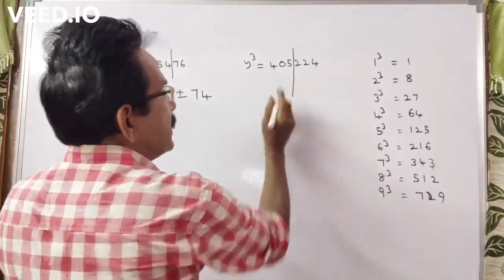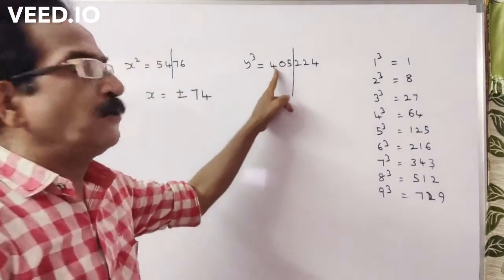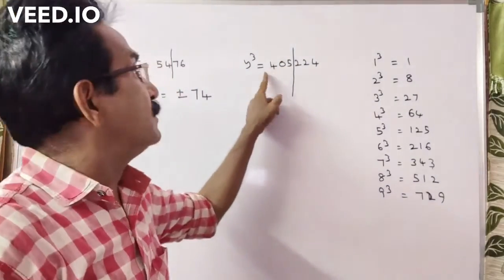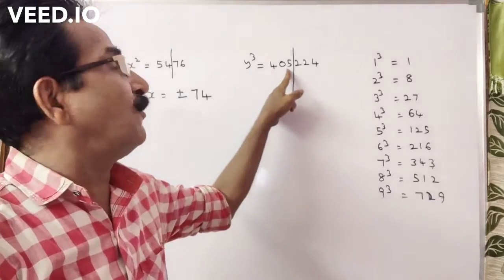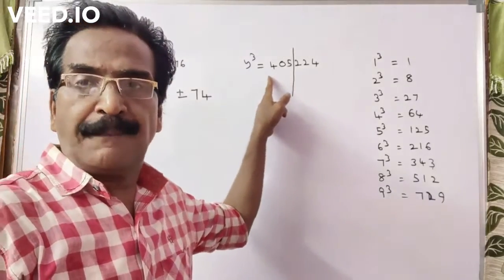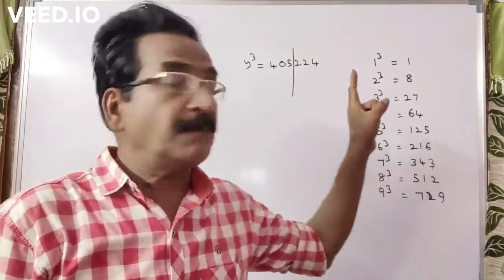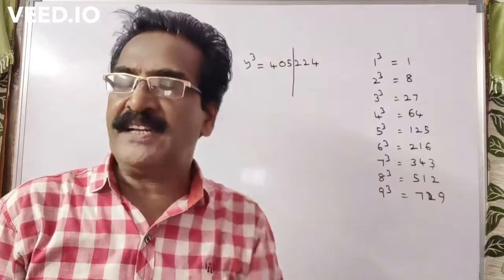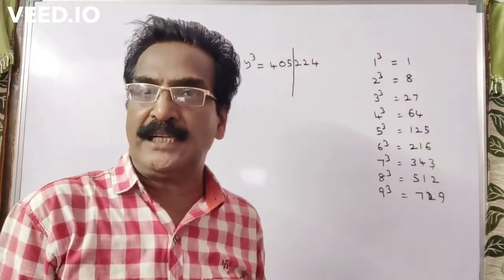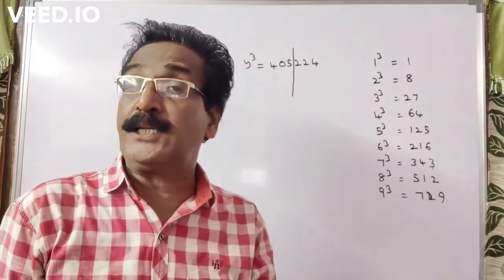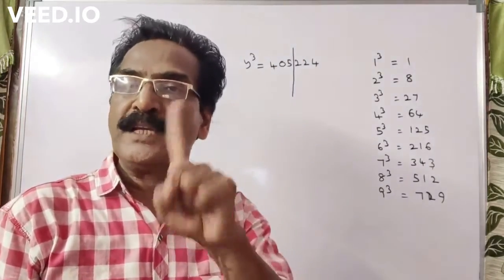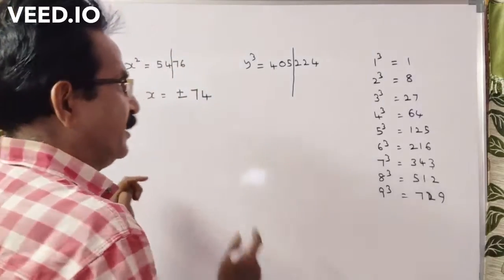Now, what is the perfect cube just below 405? 7 cube is equal to 343. So the first digit is 7.